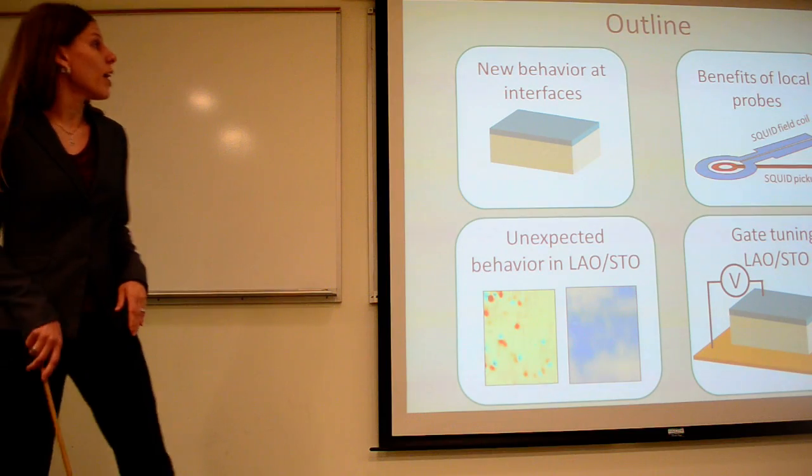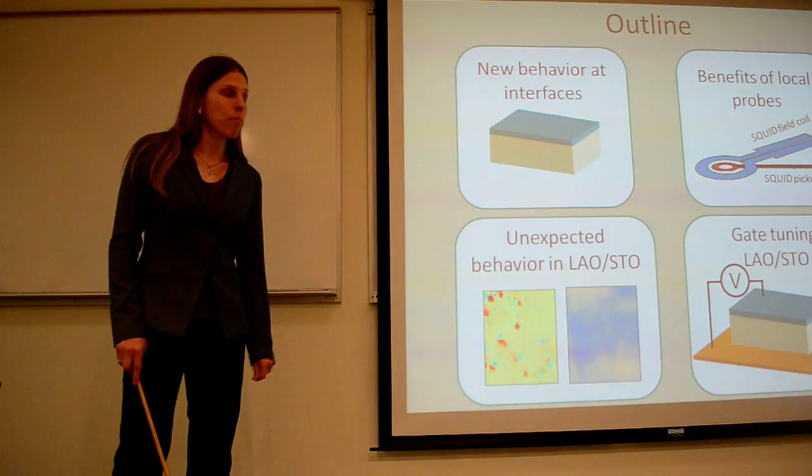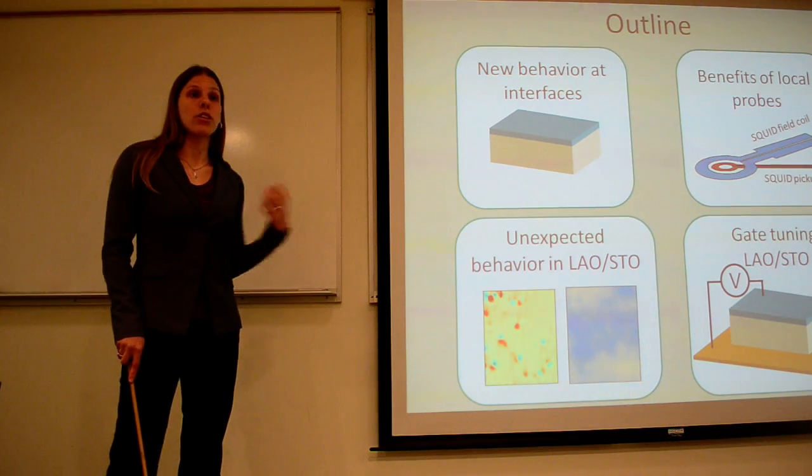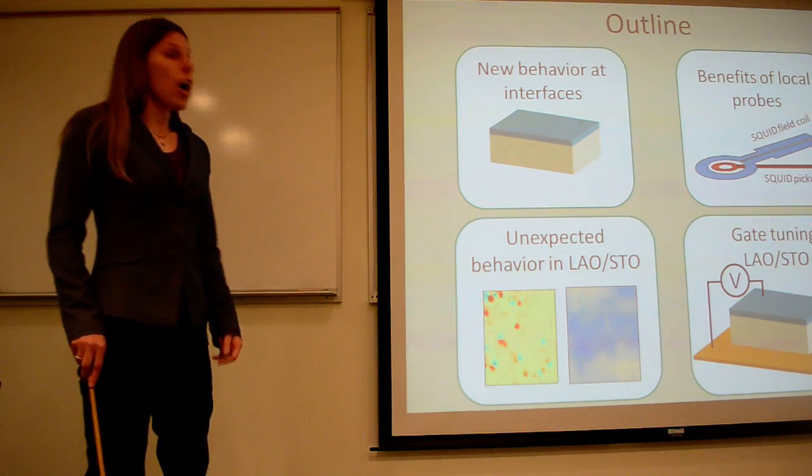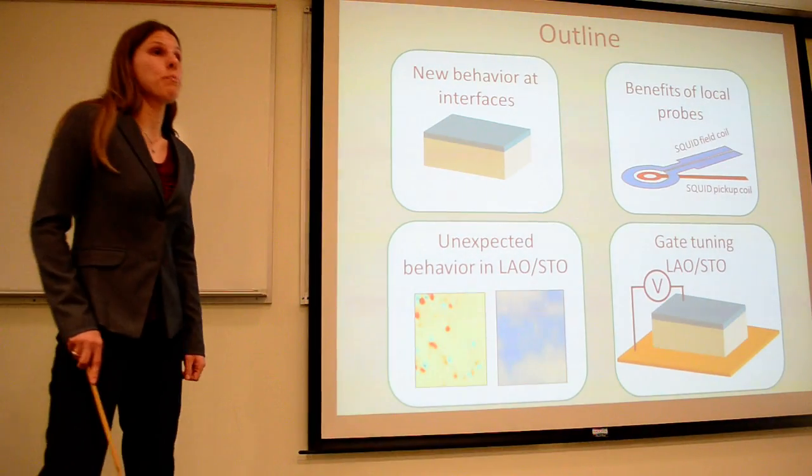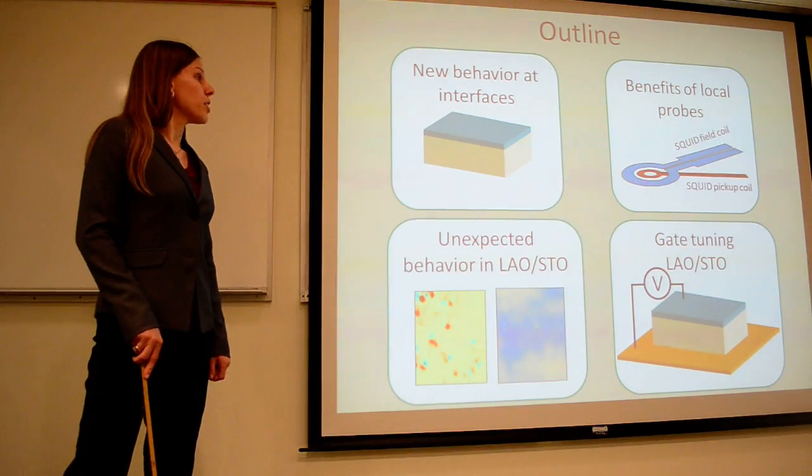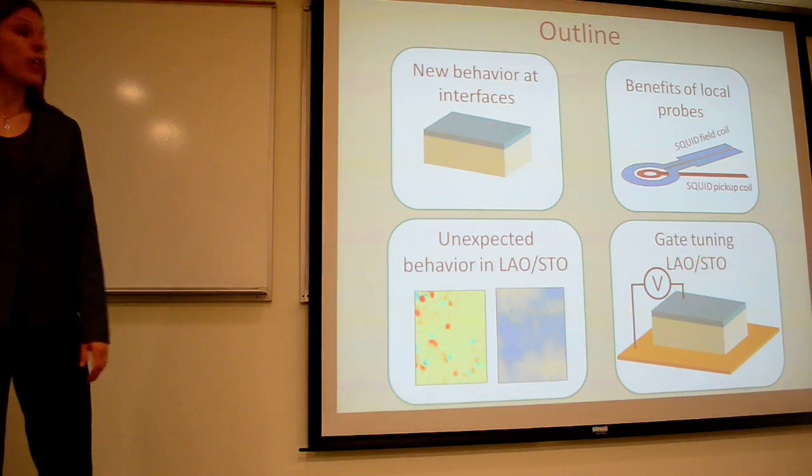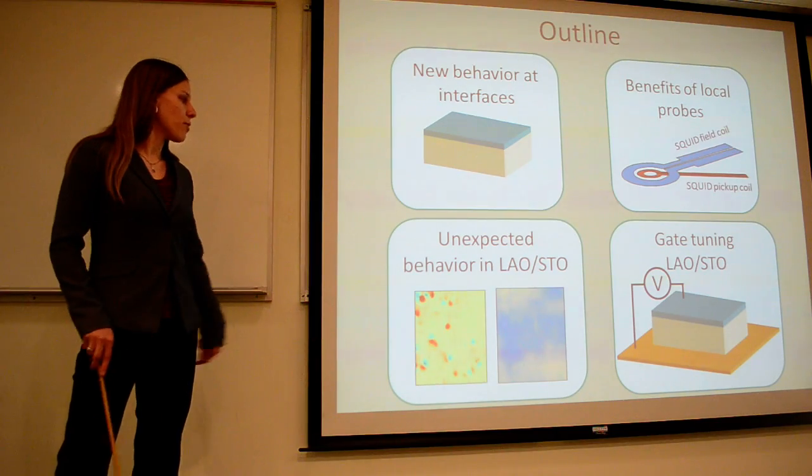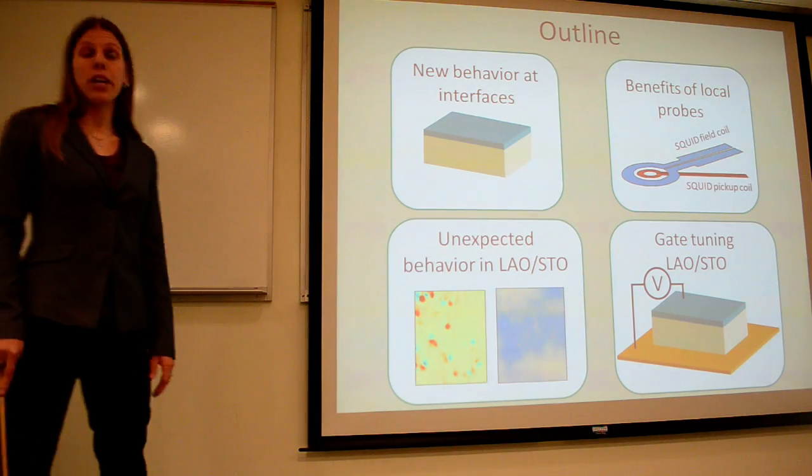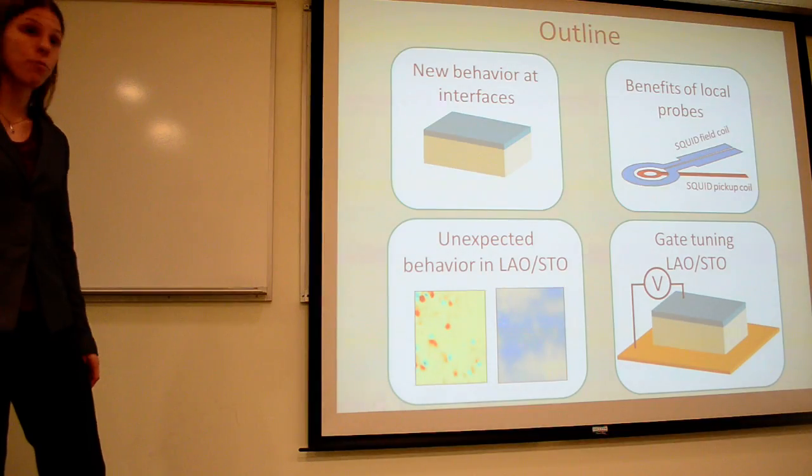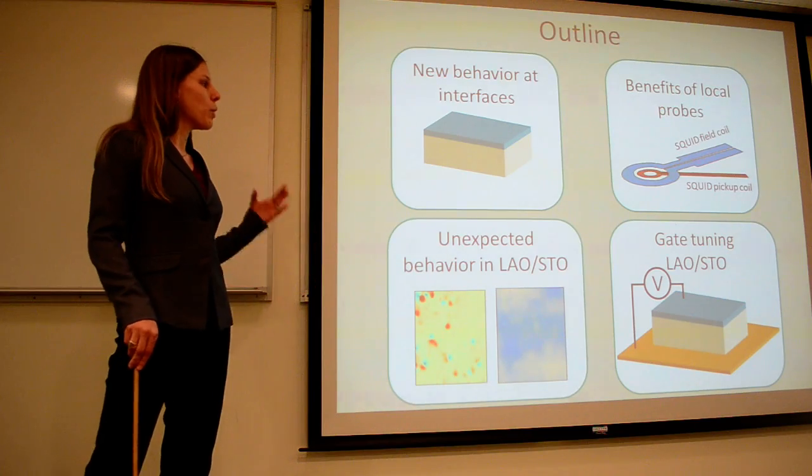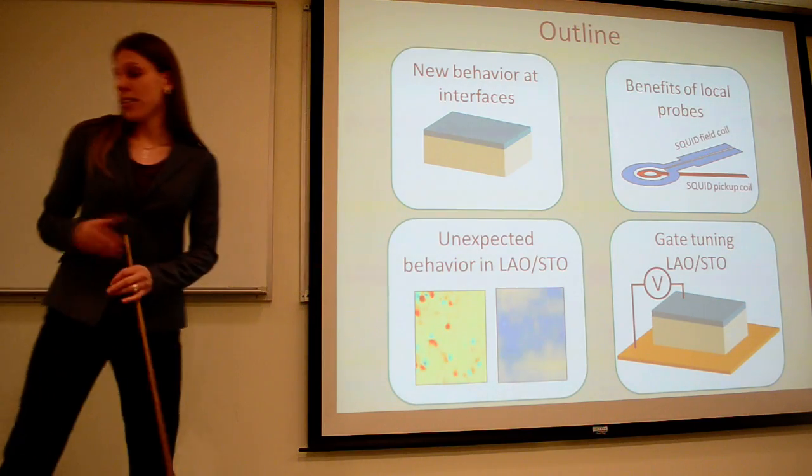But as we look forward and want to think about developing new technologies in the future, it's really important to understand the physics that goes on to drive these interesting functionalities. And it's really talking about how to measure this physics and probe it that is going to be the focus of this talk. So as an outline, I'm going to talk about new behavior at interfaces in the complex oxides and why we're interested in these layered structures rather than just bulk materials. I'll go on to talk about the benefits of using a local probe. Specifically, we're using a scanning squid microscope for this. And then the two results I'm going to share today are some of our unexpected behavior at the LAOSTO interface and our discovery specifically of the coexistence of superconductivity and magnetism at that interface. And then I'm going to conclude with talking about what we can learn from gate tuning this interface.